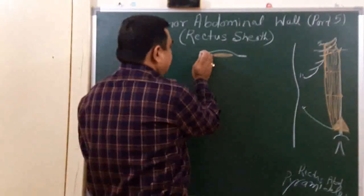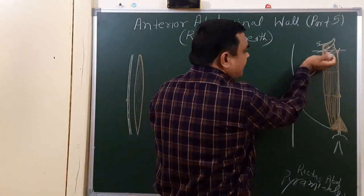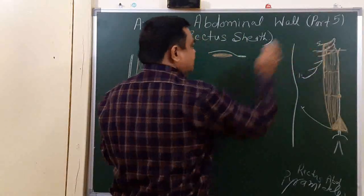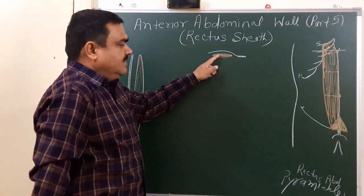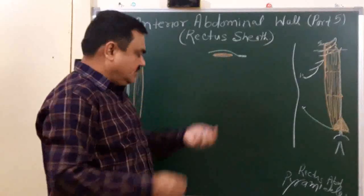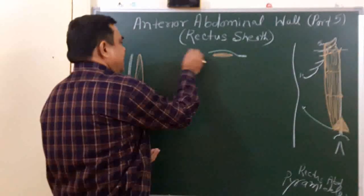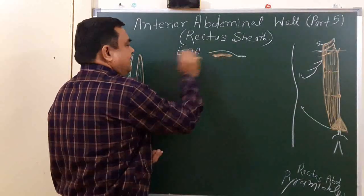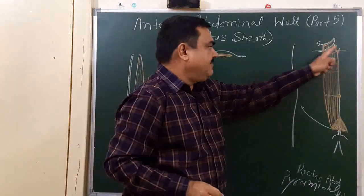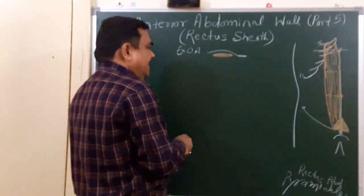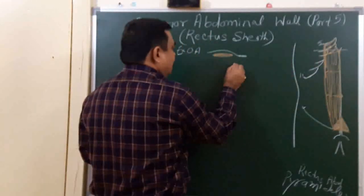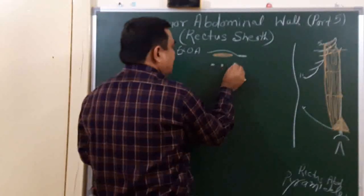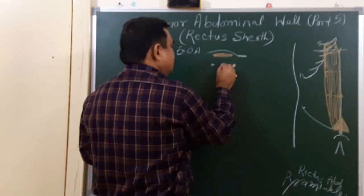This section is taken from above the costal margin. Here is the rectus abdominis, and this is the external oblique aponeurosis and the xiphoid process. Posteriorly, here you can see the fifth, sixth, and seventh costal cartilages.